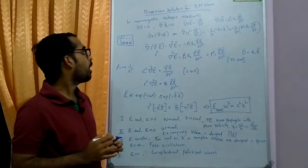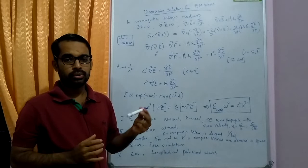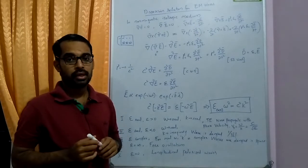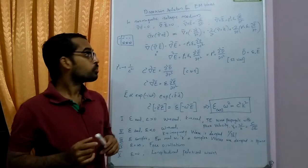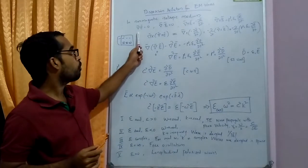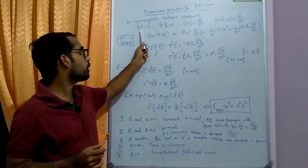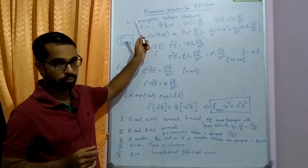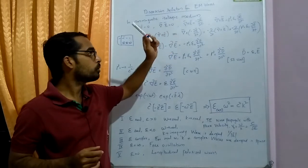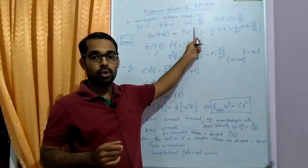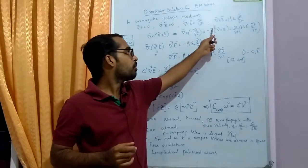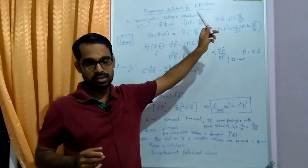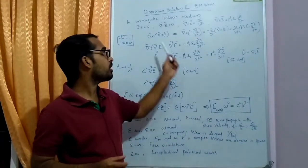We can consider plasma as a non-magnetic isotropic medium. In order to consider the dispersion relation of electromagnetic waves, we need to consider the four Maxwell's equations. In a non-magnetic isotropic medium, these are: del dot E = 0 (because rho = 0), del dot B = 0 (since it is non-magnetic), del cross E = minus dou B by dou t, and del cross B = mu_0 * epsilon_0 * dou E by dou t, where the current term mu_0 * J = 0.